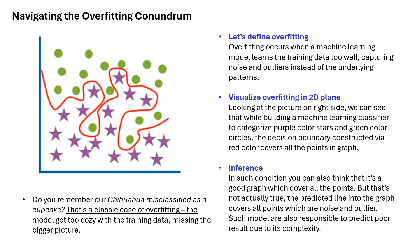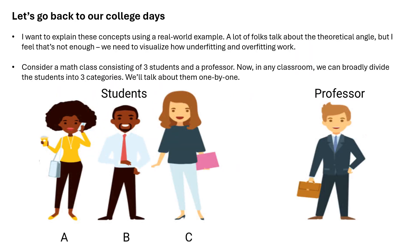Do you remember our chihuahua misclassified as a cupcake? That's a classic case of overfitting — the model got too cozy with the training data, missing the bigger picture. Let's go back to our college days. I want to explain these concepts using a real-world example. A lot of folks talk about the theoretical angle, but I feel that's not enough — we need to visualize how underfitting and overfitting work.